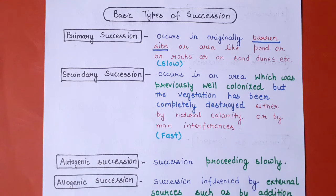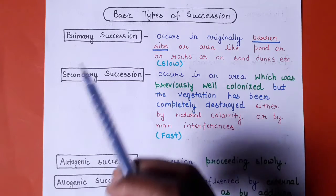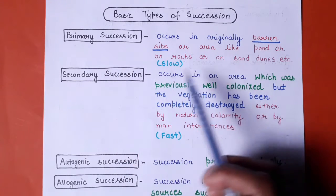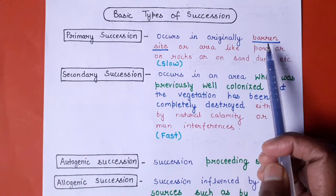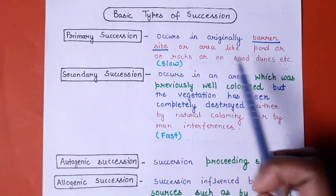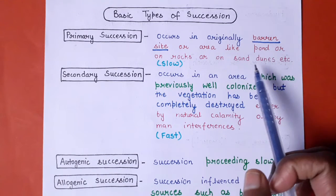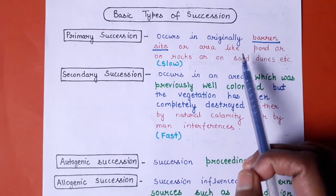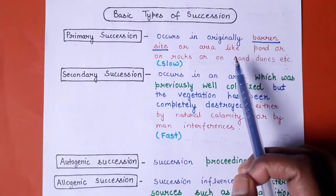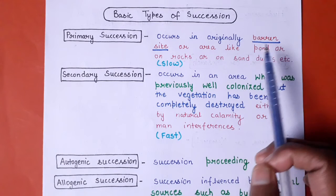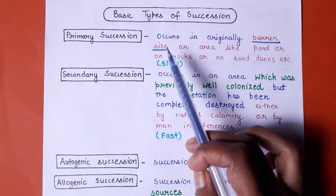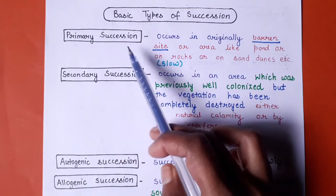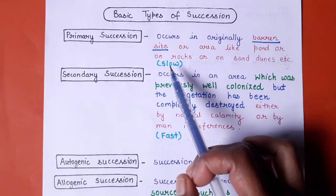Coming to the basic types of succession: primary succession is the succession originally taking place within a barren site or area — like a pond, rocks, or sand dunes — that was never previously colonized by any type of plant. It is a completely barren site, and succession taking place there is called primary succession. It is ultimately a slow process.